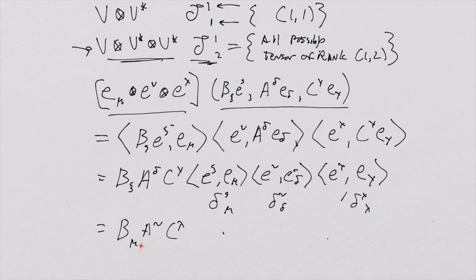This result — B_mu A_nu C_lambda — is a real number: three real numbers multiplied together. This is a map that takes an element of the Cartesian product space mirroring this tensor: V* × V × V. The covector is an element of V*, and the two vectors are elements of V, so this is an ordered triple matching that Cartesian product. This is a map from the Cartesian product space to the real numbers.